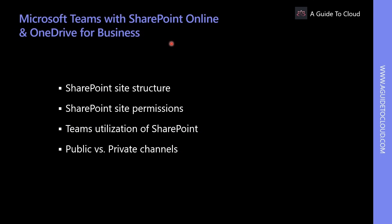One of the core features of Teams is the collaboration service it provides through SharePoint Online and OneDrive for Business. When a new team is created, a new SharePoint site is provisioned, including sub-sites for public channels. If a team is added to an existing Microsoft 365 Group, the public channels are added to an existing SharePoint site. Files shared in public channels are automatically added to the document library, and permissions set in SharePoint Online are automatically reflected within Teams.